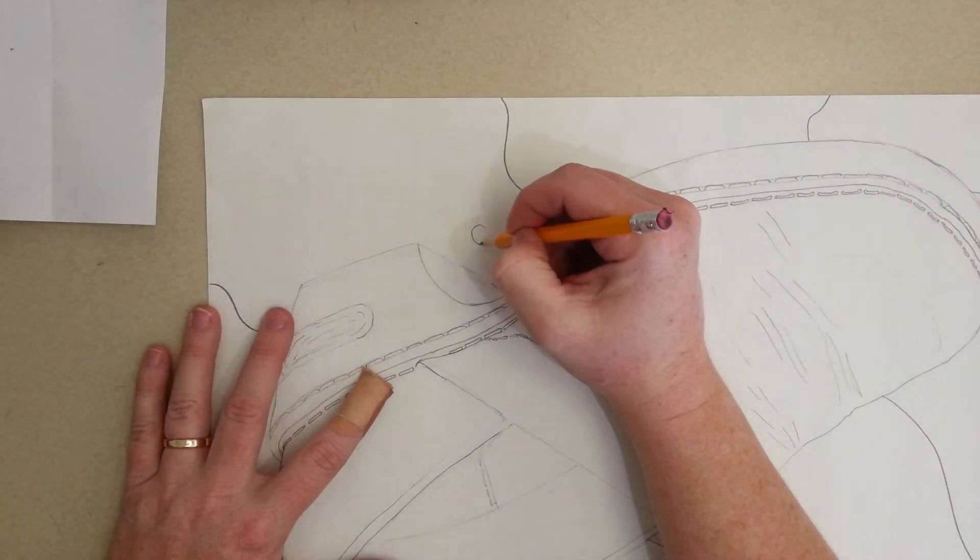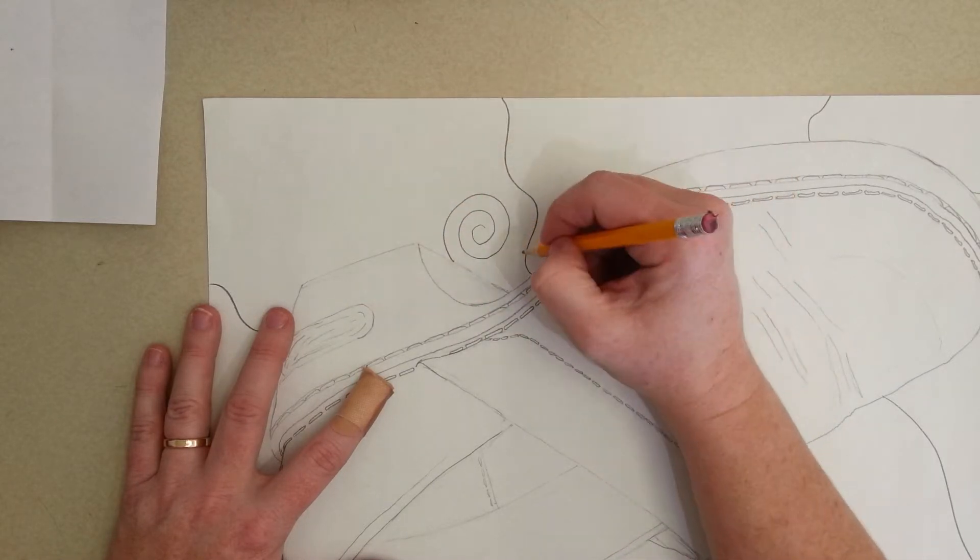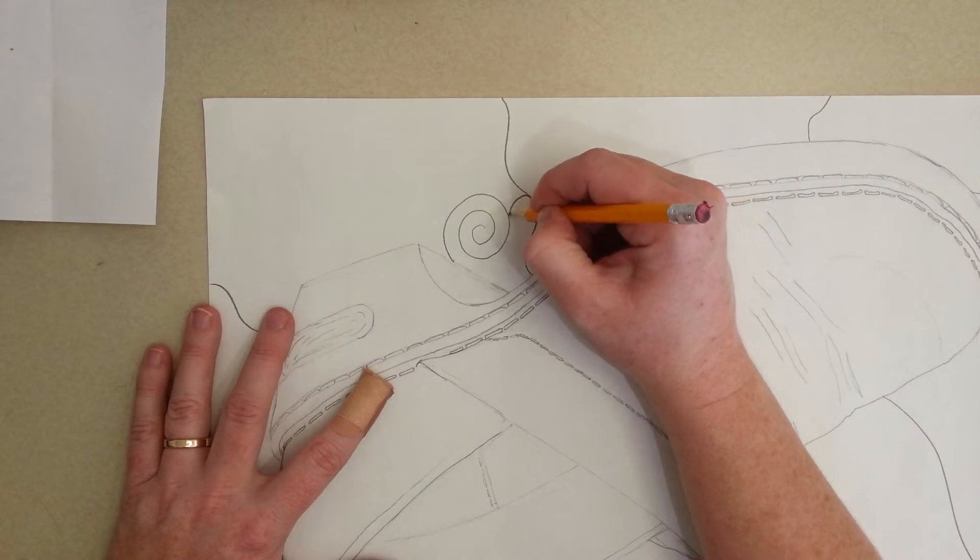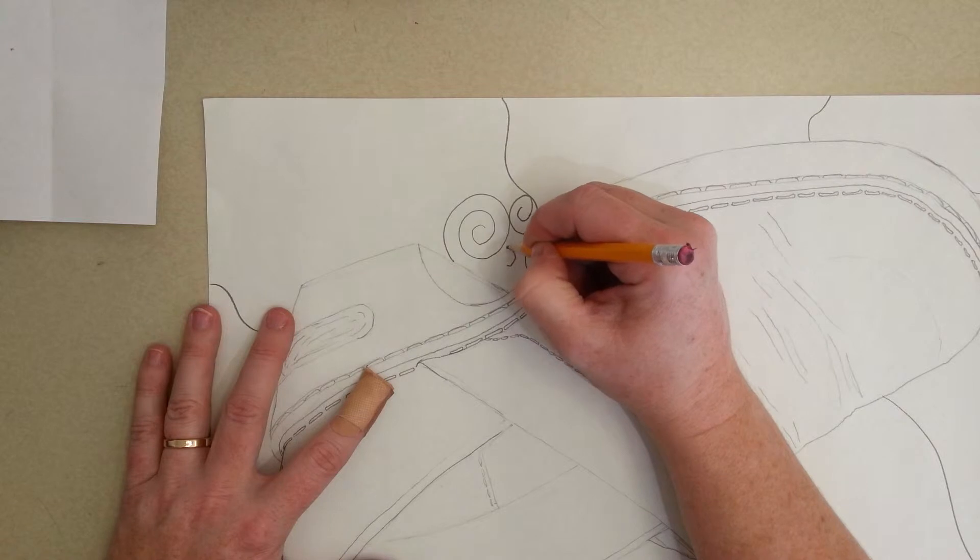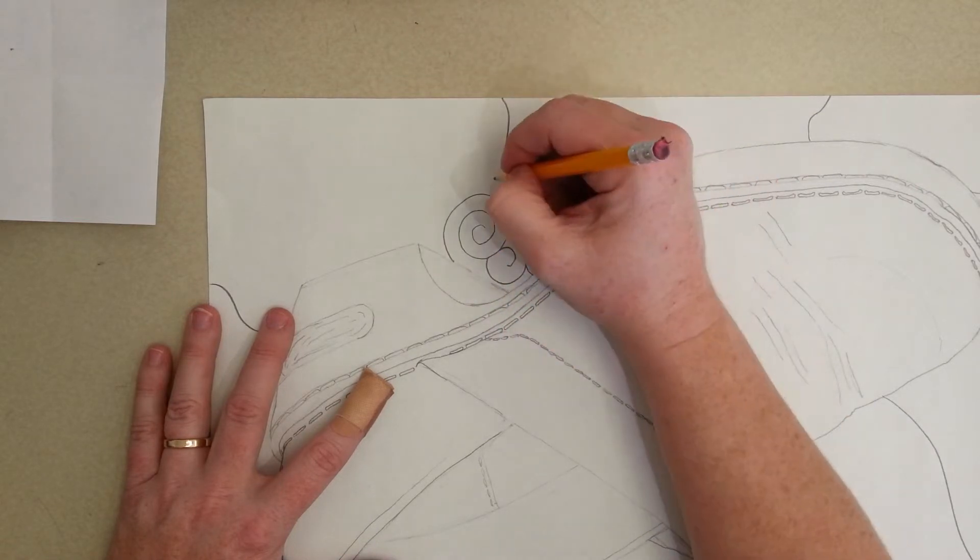So this one I'll do the spirals. And I think what I'm going to do with the spirals this time is I'm going to make them completely smushed in and filling the space up completely.